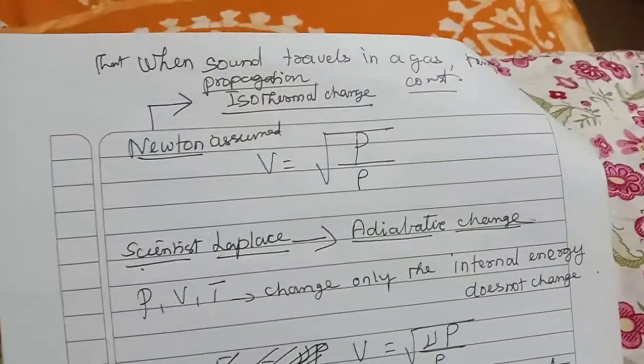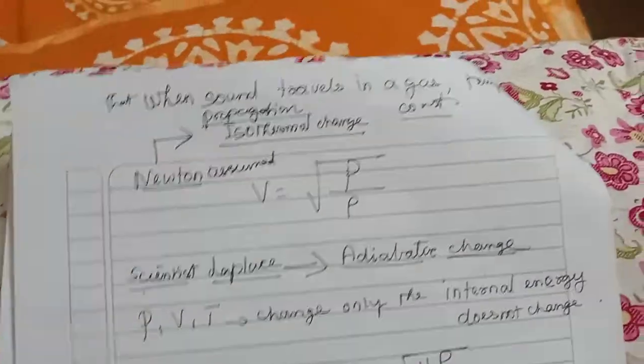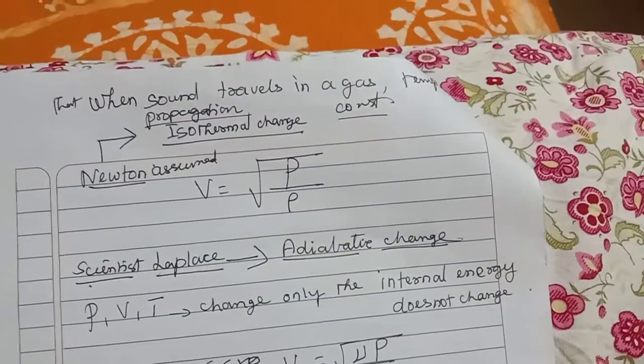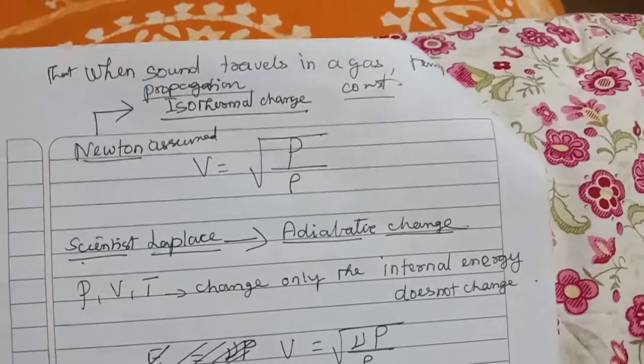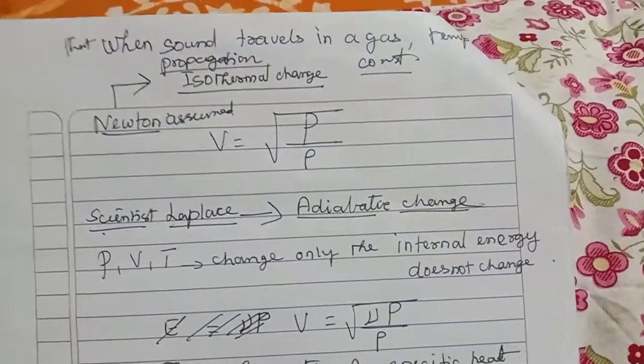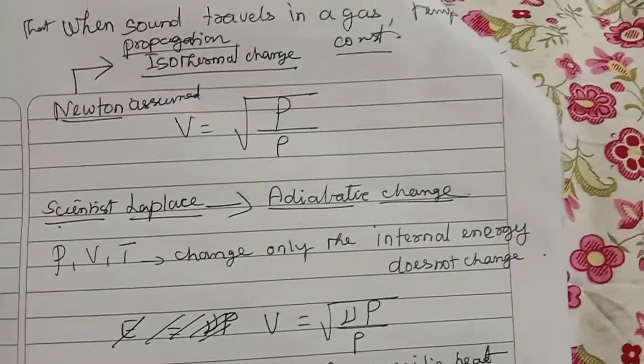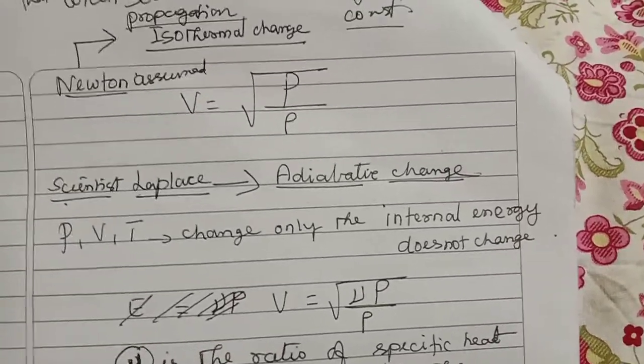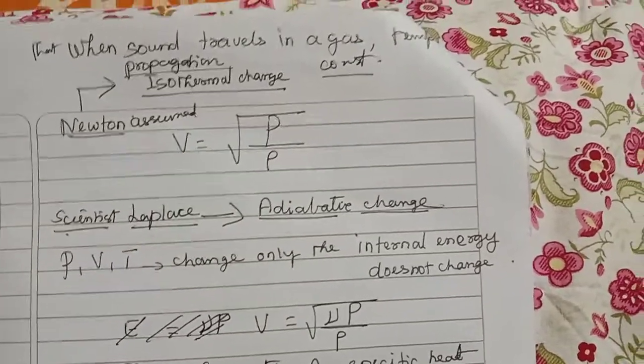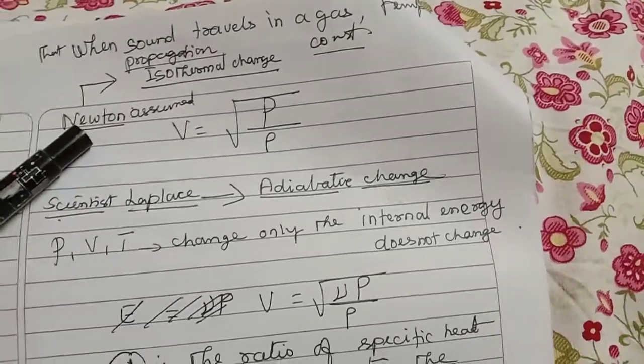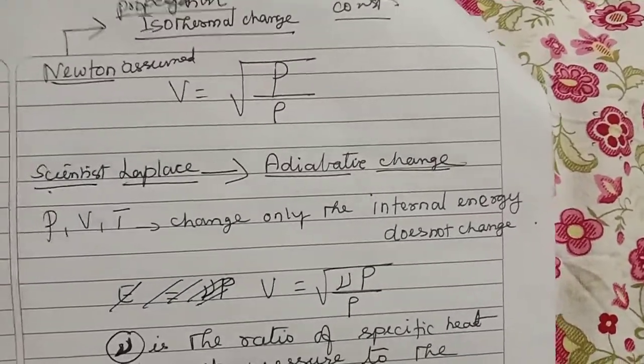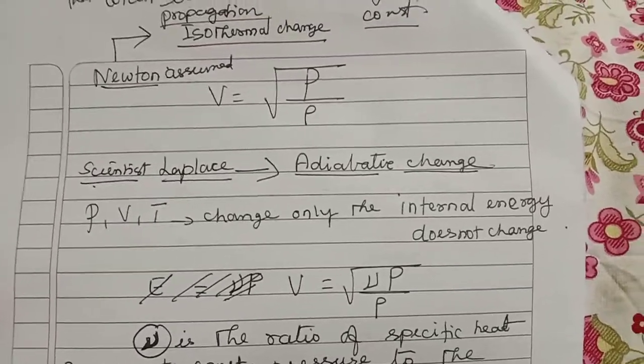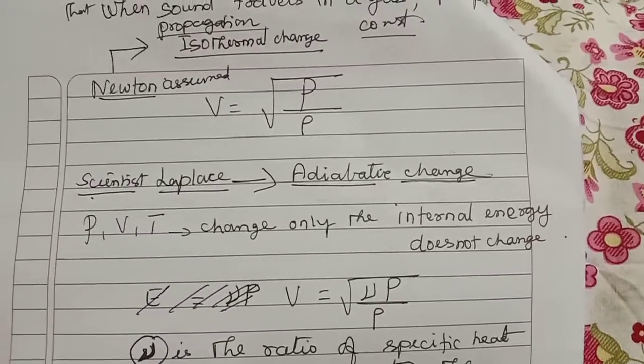Now Newton assumed: what is Newton's assumption? Newton assumed that when sound travels in a gas medium, temperature remains constant and this propagation is called isothermal change, which you will learn in detail in higher levels. Based on Newton's assumption, the formula is modified as V equals square root of P by rho, where P stands for pressure.